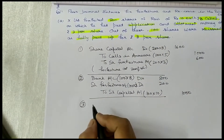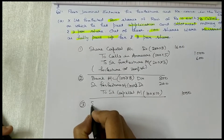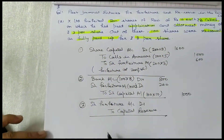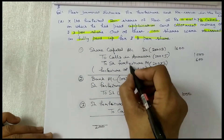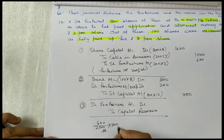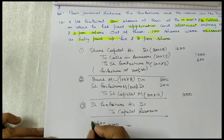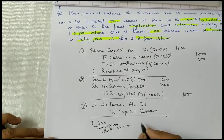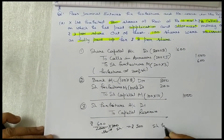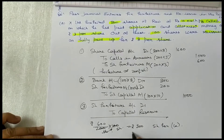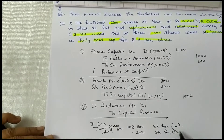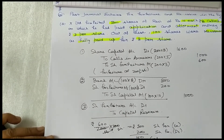Balance is transferred to share forfeiture account. Share forfeiture account debited. On 200 forfeited shares and on 100 reissued shares, the share forfeiture account balance — you have to show the same. This is Rs.300. Share forfeiture debited, share forfeiture credit, debit amount is Rs.200. Balance amount of Rs.100 is transferred to capital reserve.